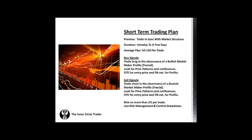For sell signals, as with everything in my teaching, you simply reverse everything. So we look for the observance of a bearish market maker profile — the fractal again — with a bearish market structure. We'll look for price patterns and confluences, utilizing optimal trade entry for our entry price and using FIB extensions 127, 162, and 200 for profit.